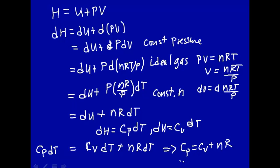This gives the relationship between heat capacity at constant pressure and heat capacity at constant volume. The heat capacity at constant pressure equals the heat capacity at constant volume plus nR, so Cp is always greater than Cv for an ideal gas. We started from the definition of enthalpy, made assumptions of constant pressure, ideal gas, and constant n, and derived this relationship.